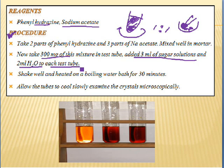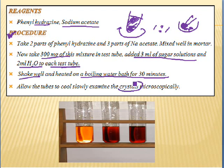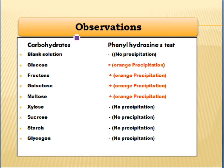Shake the tube well and heat it on a boiling water bath for 30 minutes. Allow the tube to cool slowly in the water bath and examine the crystals by microscopic analysis. Observation: a yellowish-orange crystal is formed with reducing monosaccharides, while all other sugars do not give this color.